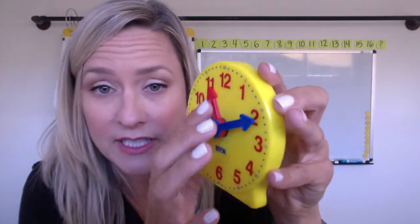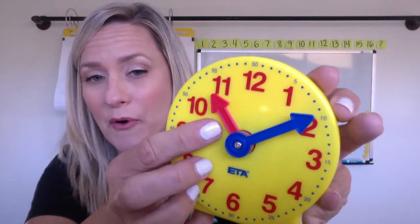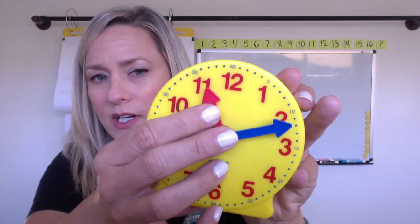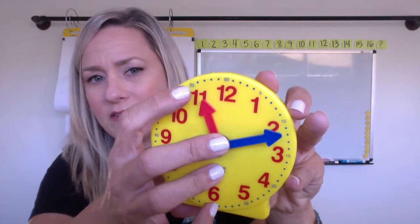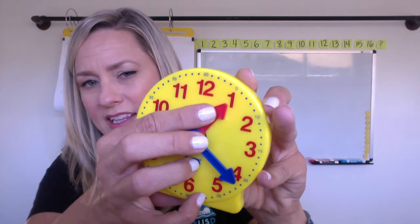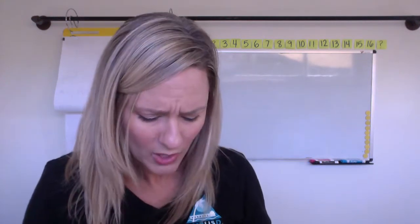And maybe you already knew the red hand was the hour hand. So if I go like that, it matches the red number 11, not the 55. Then like that, it matches the 12 and the one and so on.